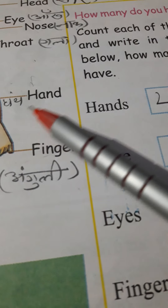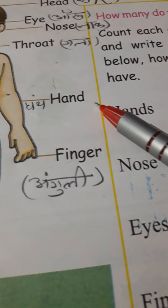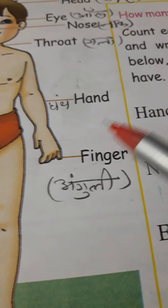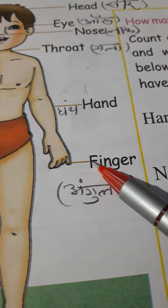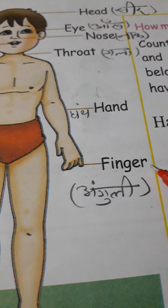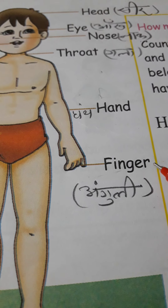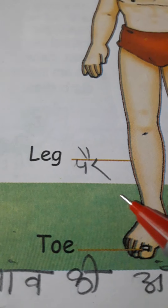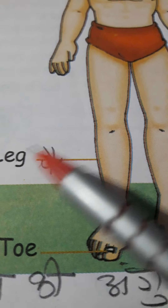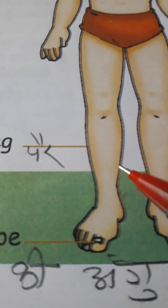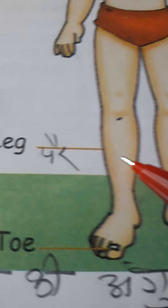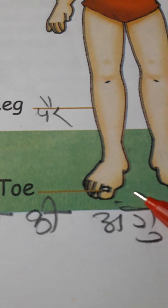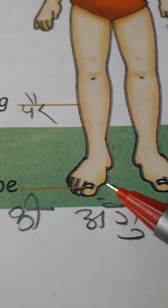Hand — hand. Finger. Leg means... Toe means...